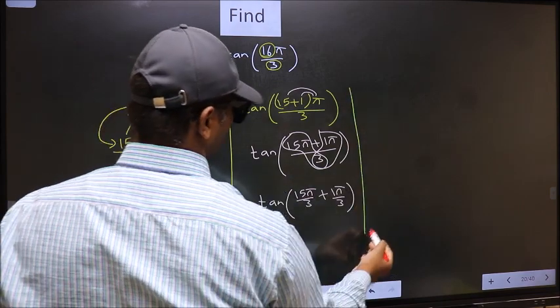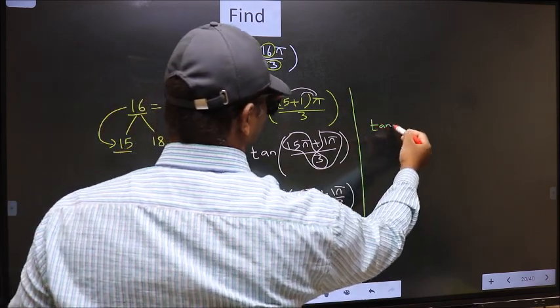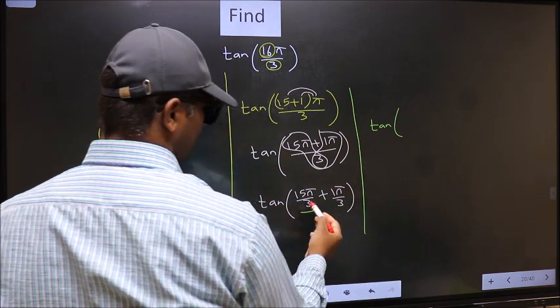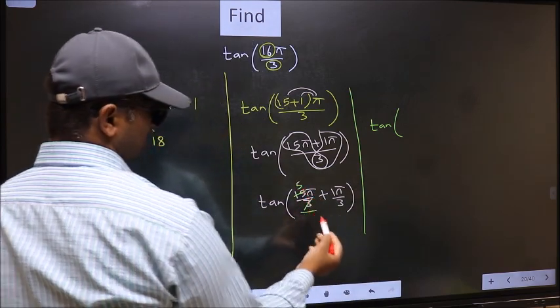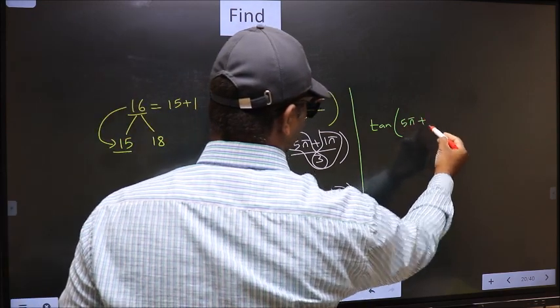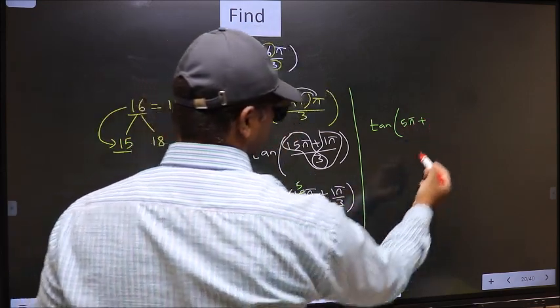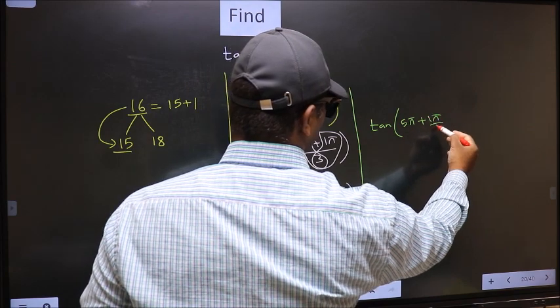Next, tan. Now, here we should cancel 3 ones, 3 fives. So, we get 5 pi plus this no change, 1 pi by 3.